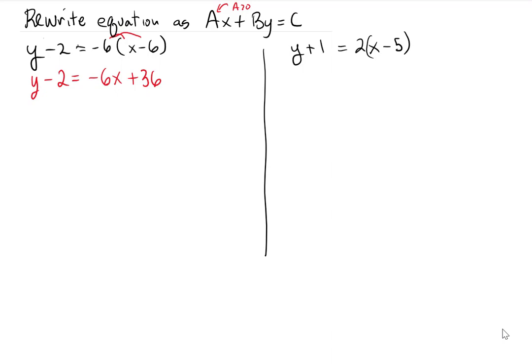Now it does want us to collect all the variables on the left and all the numbers on the right. So what I'm gonna do here is I'm gonna add on a 6x to both sides, and I'm gonna add on a 2 to both sides. Because what is that gonna do for me? Well it's gonna cancel out these pieces, and it's gonna cancel out these pieces.